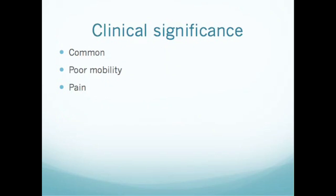Hip fractures are an incredibly common condition in the elderly. Not only do they cause a significant problem with mobility, but there's also a large physiological insult, particularly in older patients with multiple comorbidities. The first thing to think about is the cause of the fracture and whether there's a medical cause for the fall. It's important to think of a neck of femur fracture not just as a broken bone but as a physiological process that may have led to the fall in the first place.